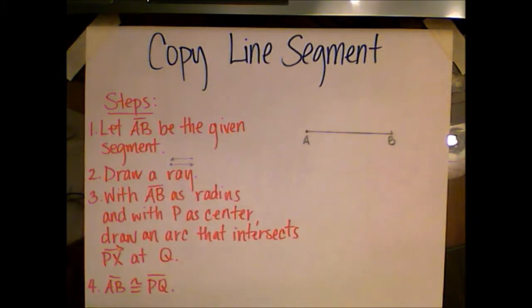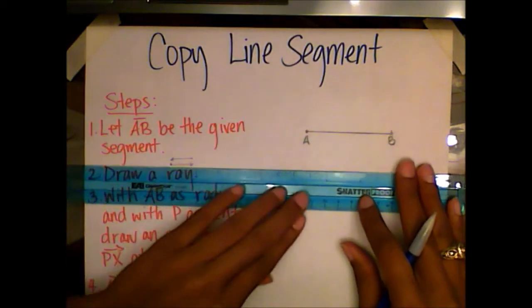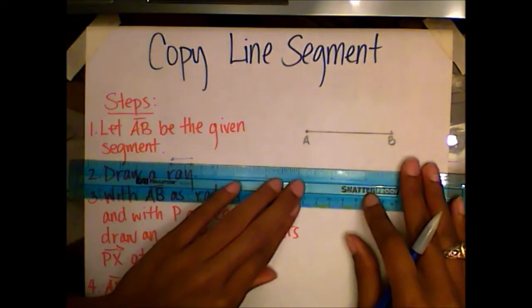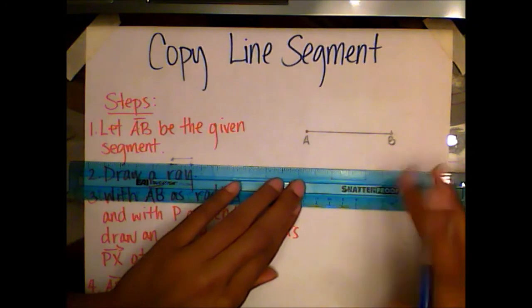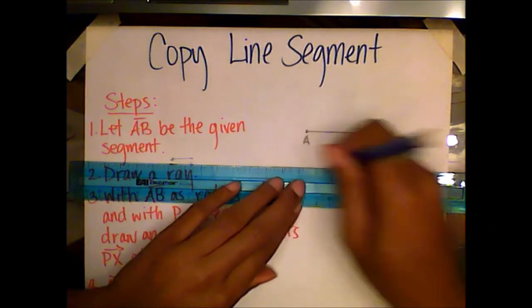So I'm going to grab my straight edge, and I'm going to trace it so that I create a line, a long line that's longer than the line segment AB.